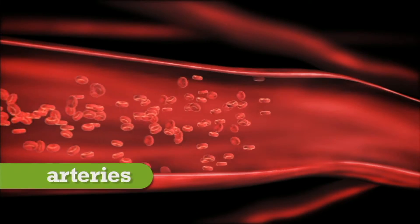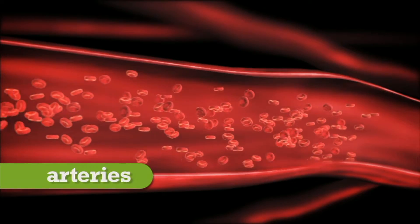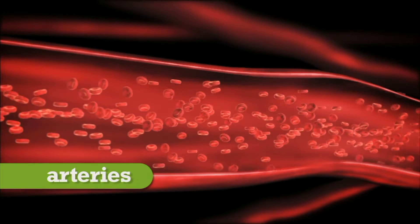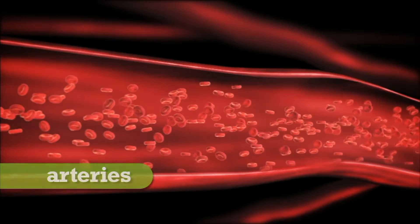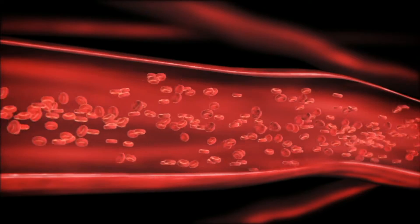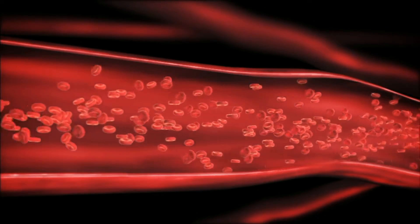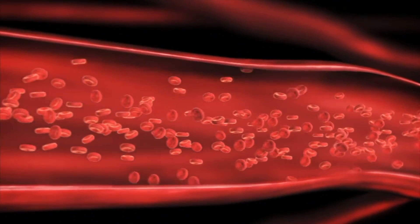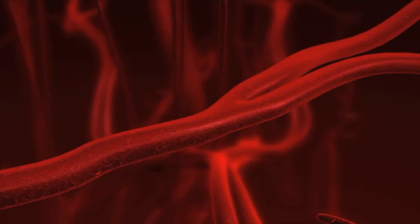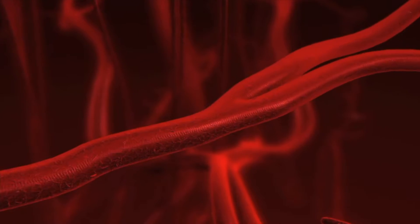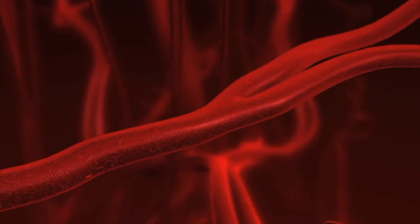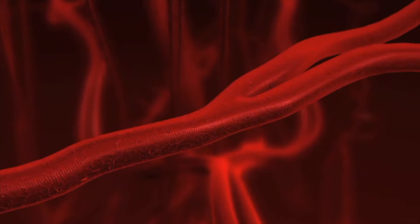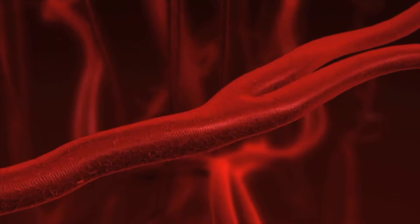Arteries move blood from the heart. Most arteries carry blood rich in oxygen. The blood in arteries is under pressure. Arteries have thick walls, and muscles in the walls help pump blood to all parts of the body.